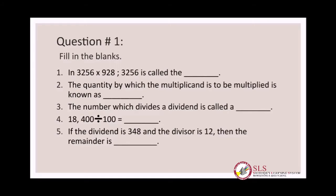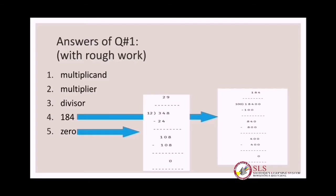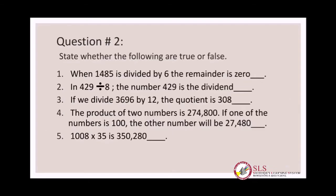Number five: if the dividend is three hundred and forty-eight and the divisor is twelve, then the remainder is dash. This part also needs rough work — three hundred and forty-eight will be divided by twelve to get the remainder. The answer key is on the next page.